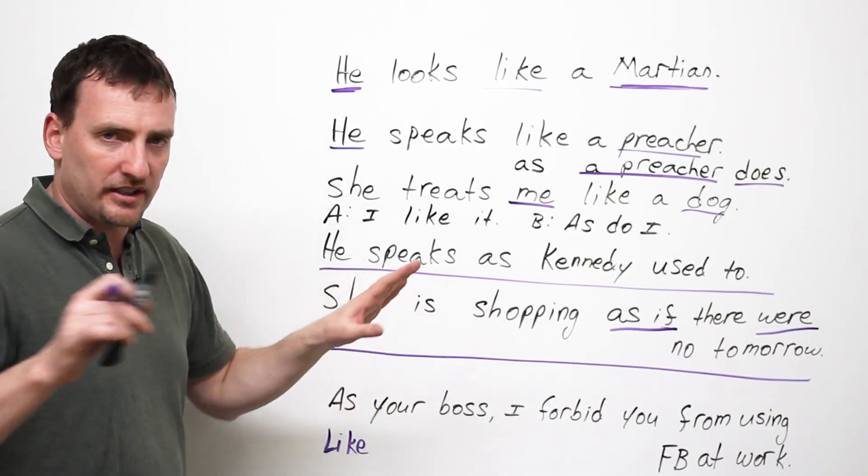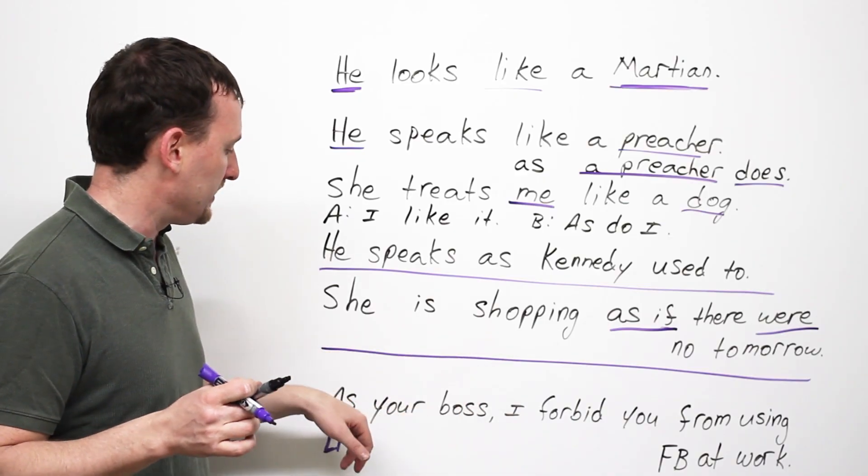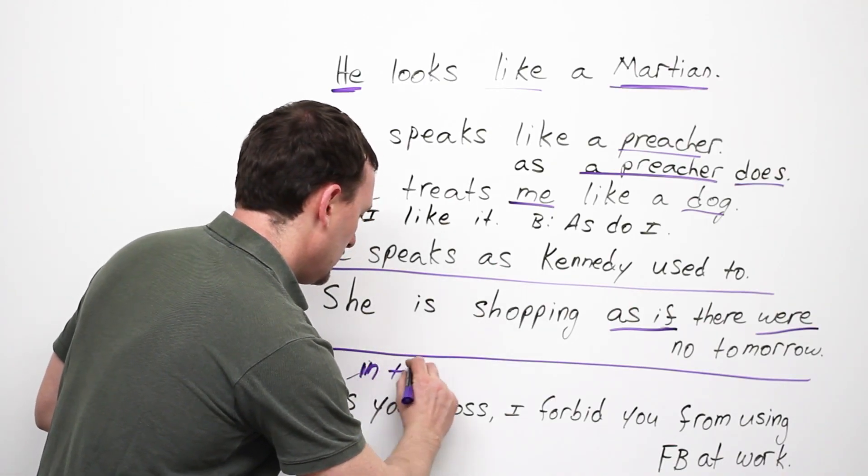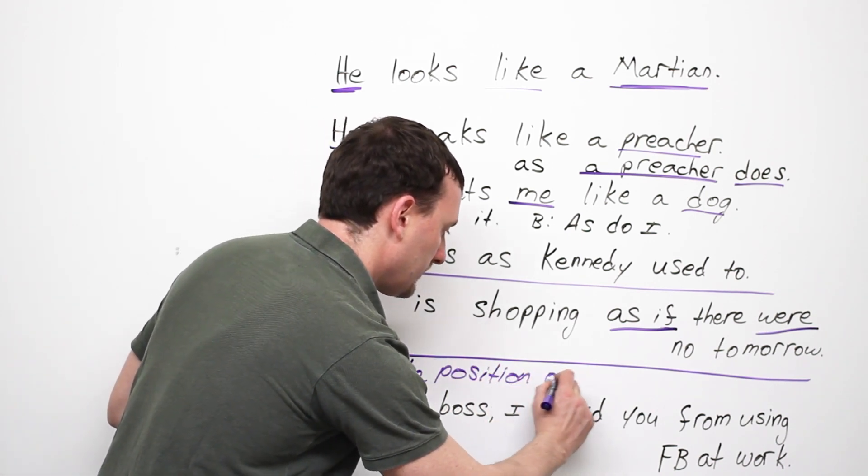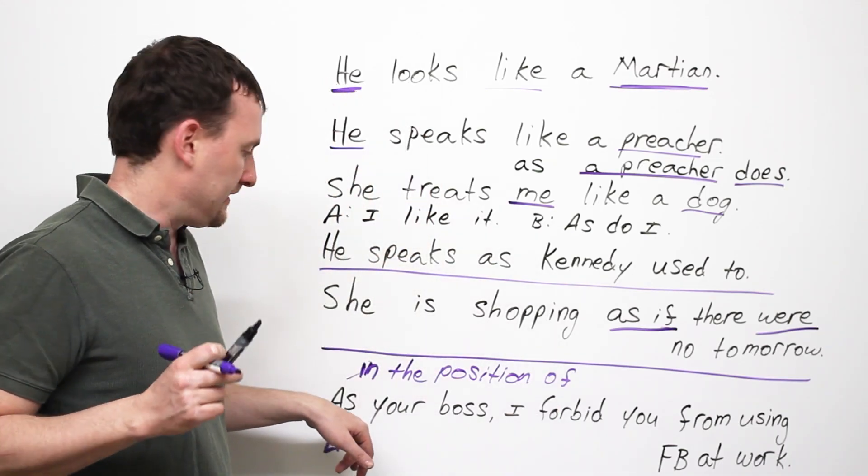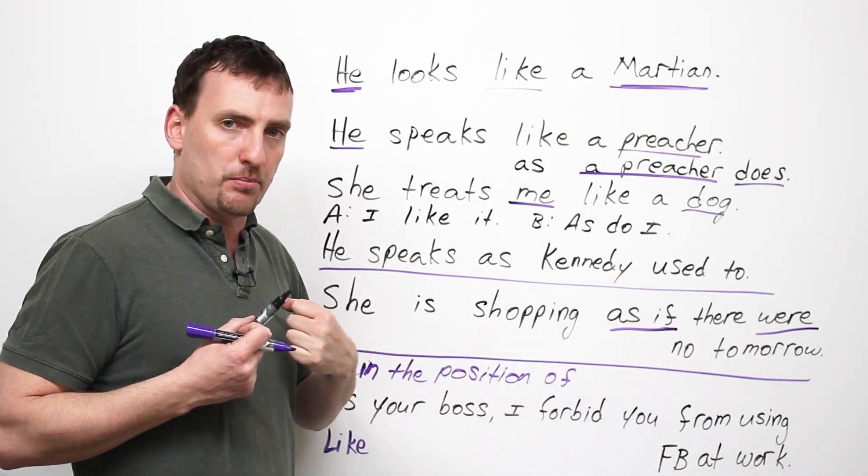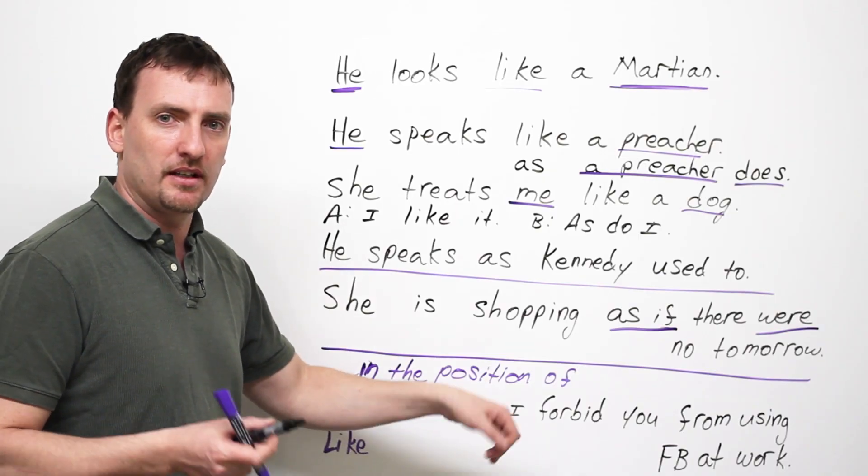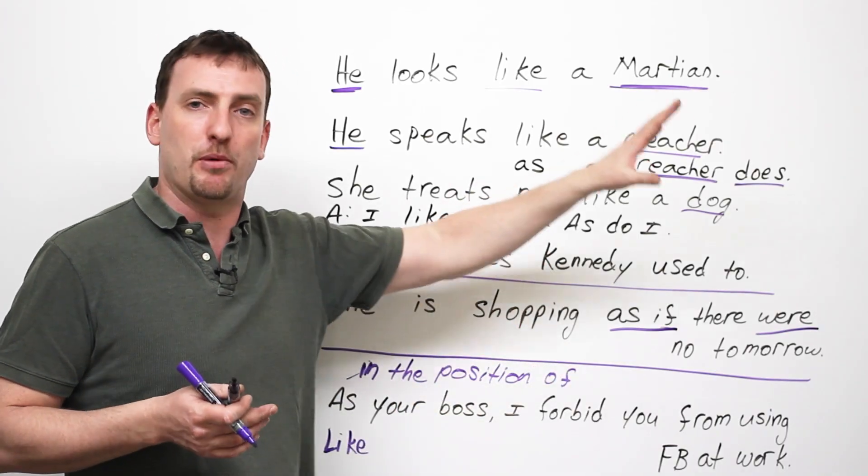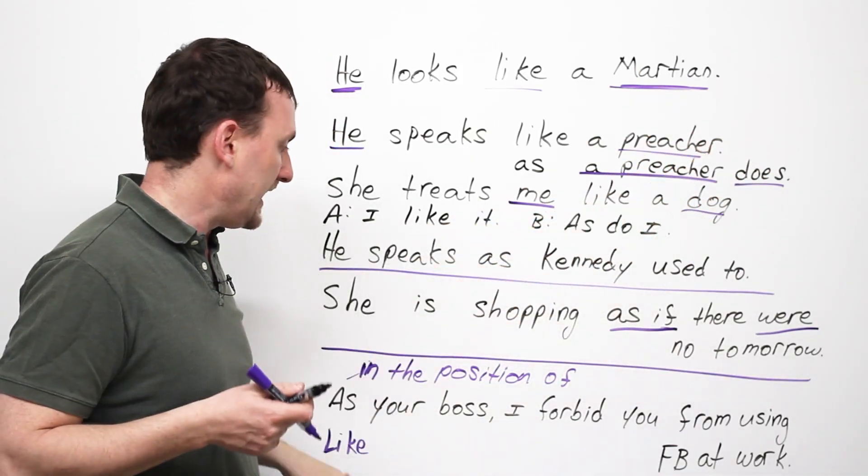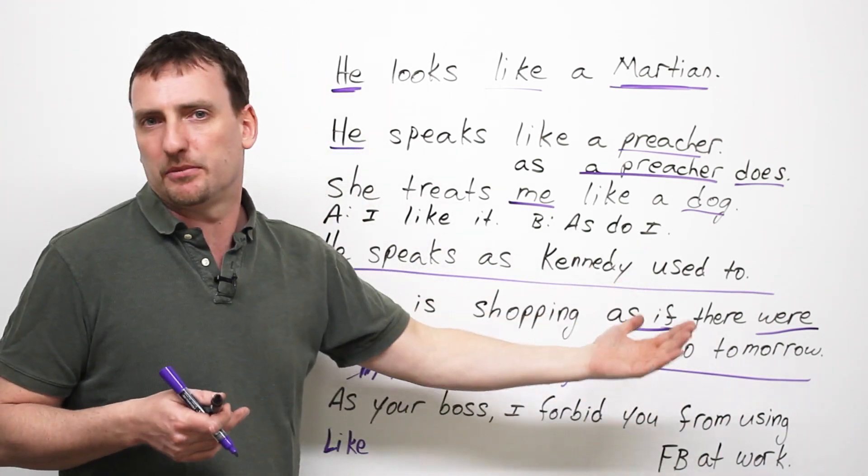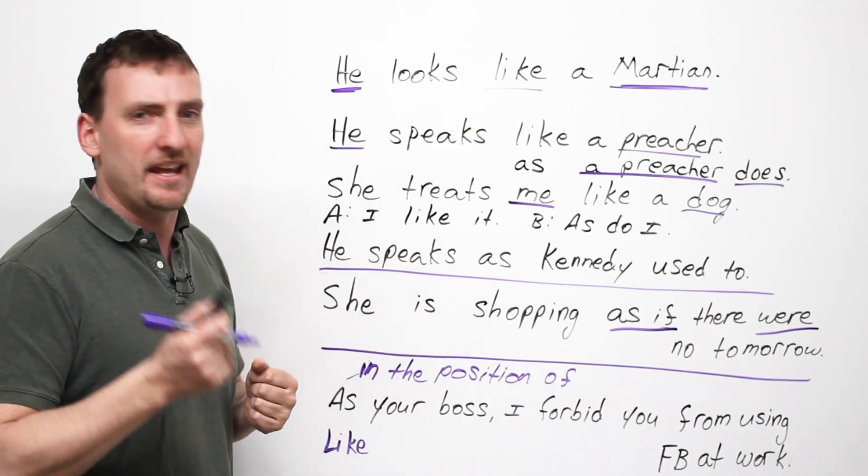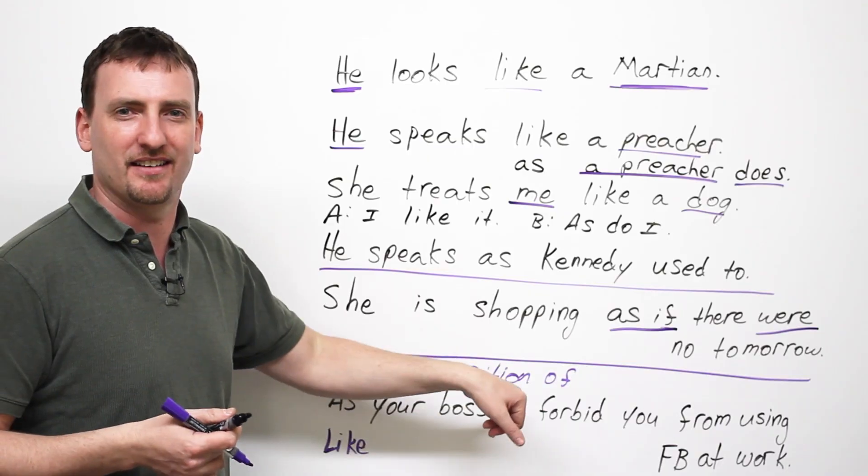One last thing I want to mention, a whole different use of as and like. As your boss. So, because I want you to understand this, so there's no confusion. As here means in the position of. So here, as is not a comparison. It is a preposition telling you, I'm in this position. So, as your boss, I am your boss. I have the power to forbid you from using Facebook at work. But, if you say, like your boss, then you're comparing. Then you're showing a similarity. Like your boss. So, your boss thinks this. I agree. I think so too. So, like your boss, I forbid you from using Facebook at work. Maybe I'm the assistant boss. He's the president. I'm the vice president. Like him means I agree with him. We are similar. You can't use Facebook at work. And if you do use Facebook at work, be careful. A lot of bosses think like this.